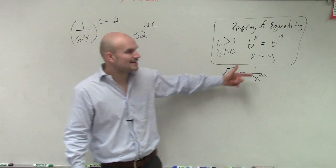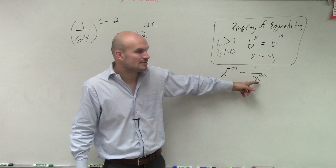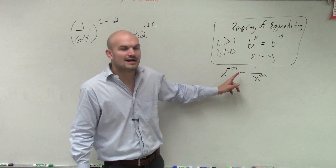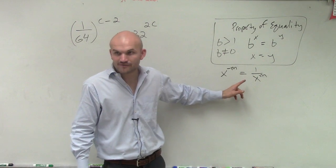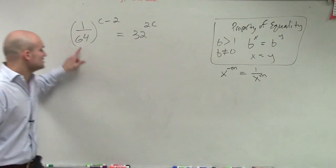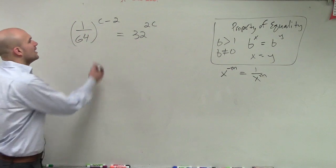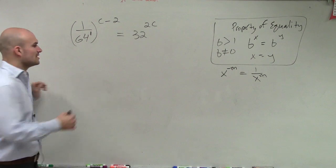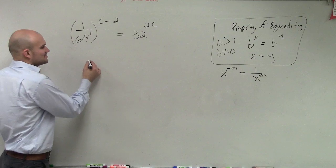So if I have a number in the denominator to rewrite in the numerator, I can write it as its negative version. Now you might say, that's with numbers with an exponent. Well, is 64 raised to an exponent? It always is - it's always raised to the first power. So if I want to rewrite this in the numerator using the properties of exponents, I can say 64 to the negative first power.